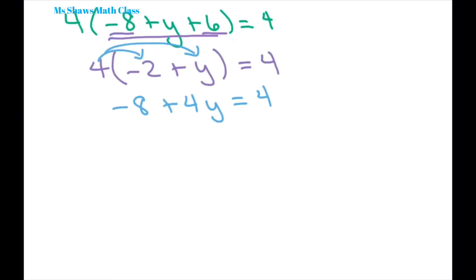And now we're going to add eight to both sides. So we get four, that's zero. So four y equals 12. Divide, use your division property of equality. So you get y equals three. So three should be your solution.